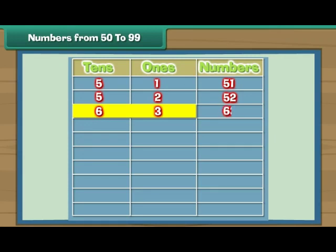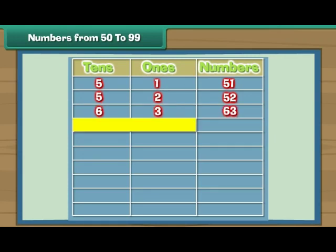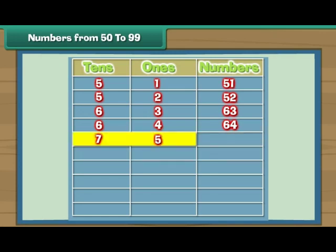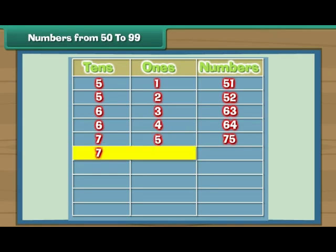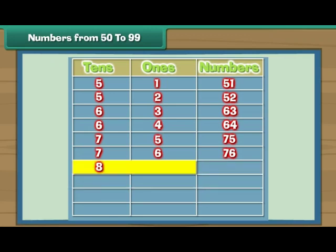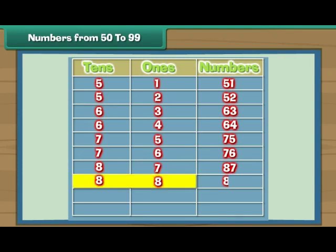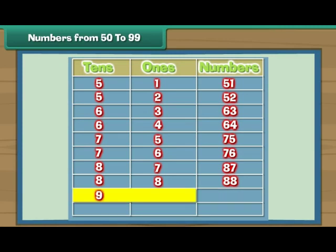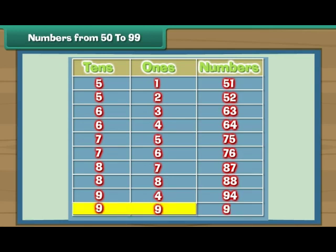Six tens and three give 63. Six tens and four is 64. Six tens and ten is 70. Seven tens and five is 75. Seven tens and six is 76. Seven tens and ten is 80. Eight tens and seven is 87. Eight tens and eight is 88. Eight tens and ten is 90. Nine tens and four is 94. Nine tens and nine is 99.